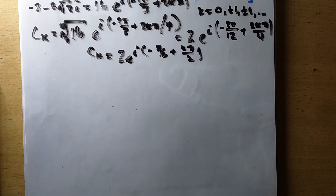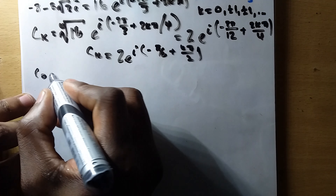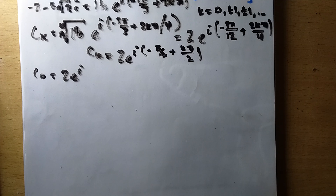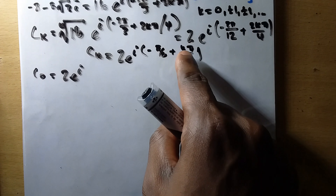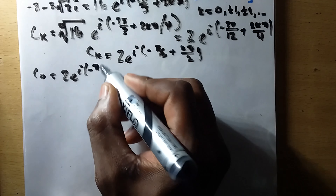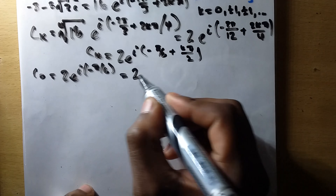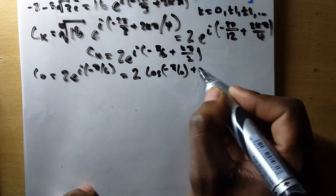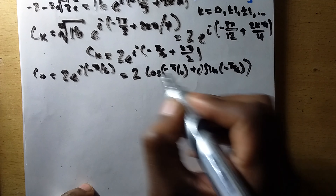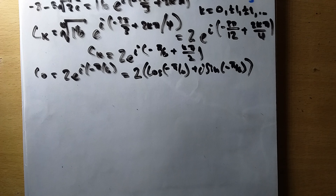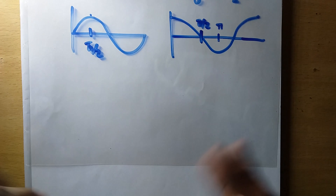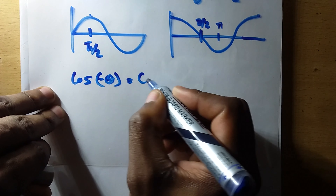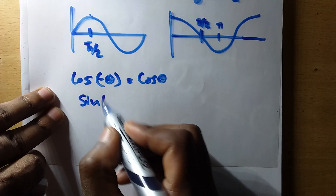For k = 0, c₀ = 2·e^(i·(-π/6)) = 2·(cos(-π/6) + i·sin(-π/6)). We note that cos(-θ) = cos(θ) and sin(-θ) = -sin(θ), so this becomes 2·(cos(π/6) - i·sin(π/6)).